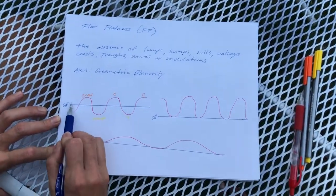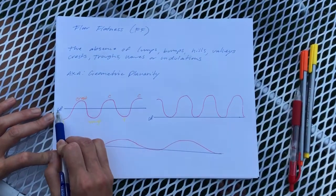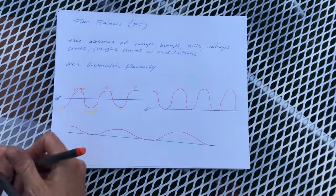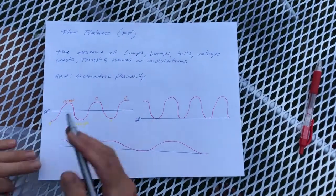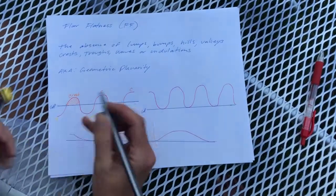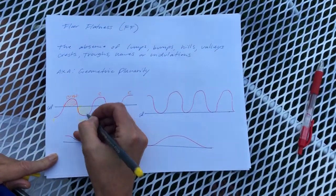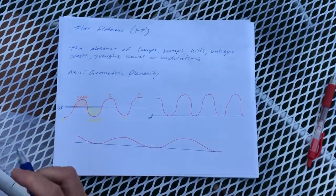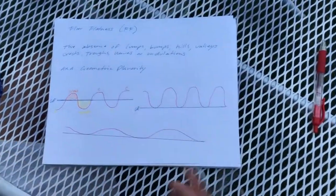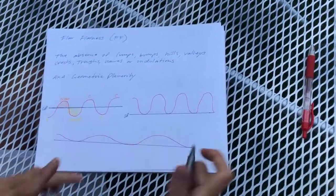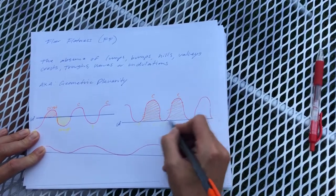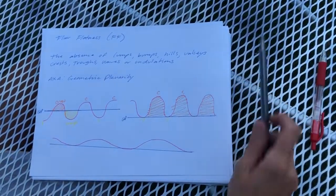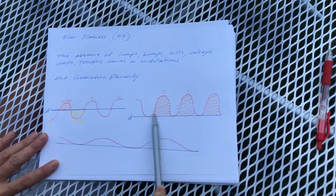Here you can see that this blue line represents true flatness or geometric planarity, and the red line represents crests and troughs that really happen in real life. So if I want to get to geometric planarity, I can whack down the crests and fill up the troughs until I get a perfect plane. What we're going to do with our installation is actually just whack our crests off to meet our troughs.